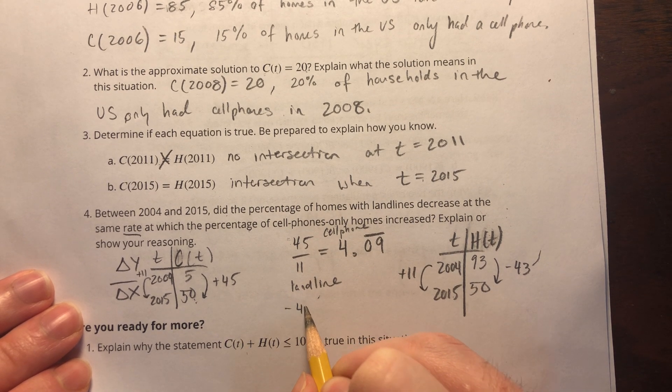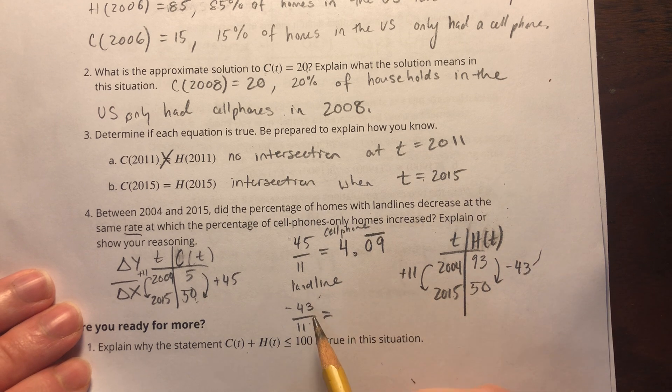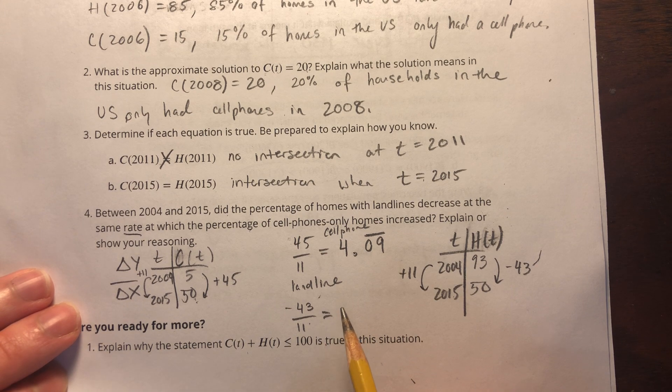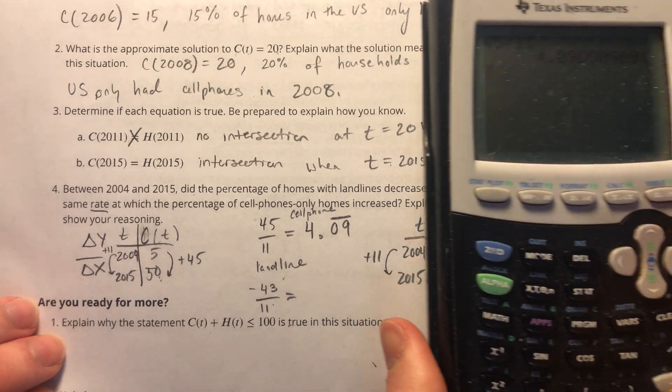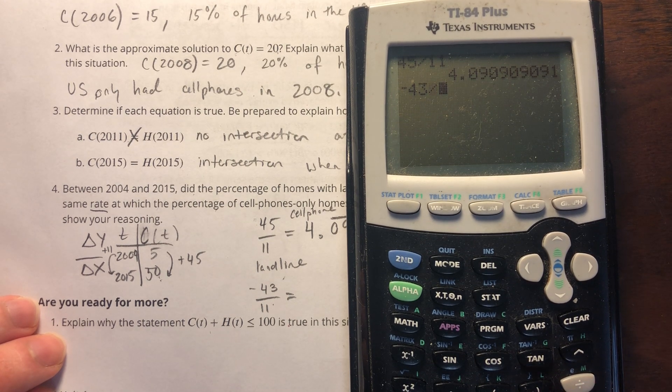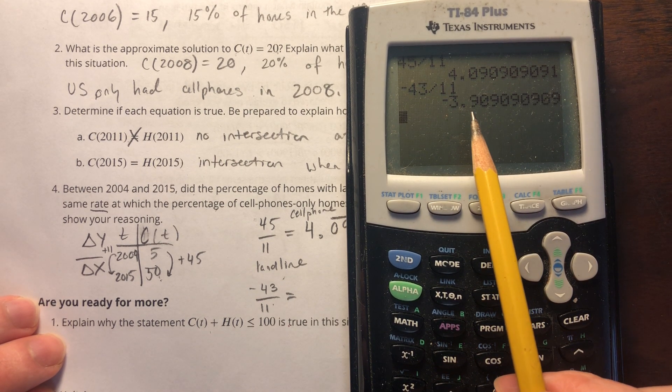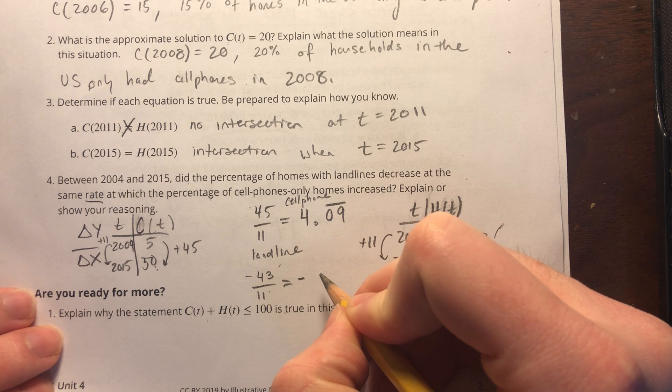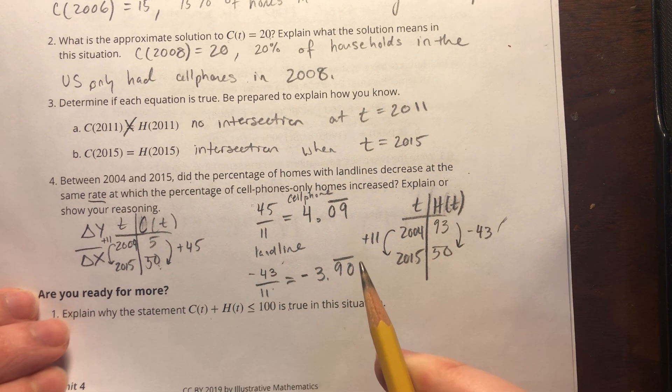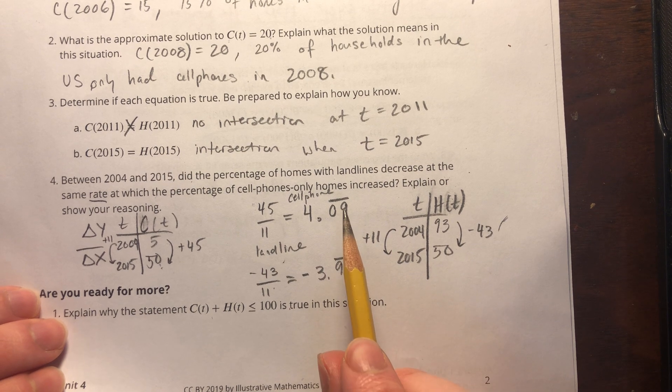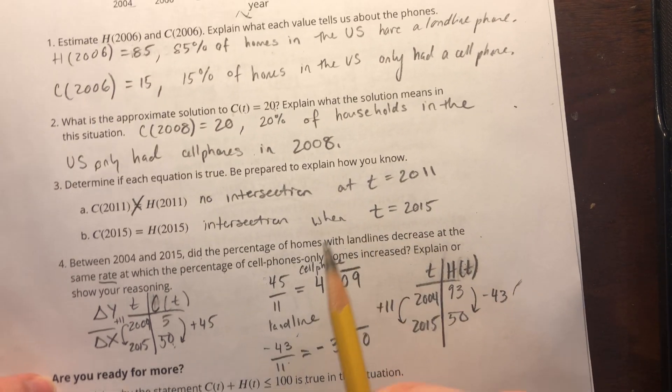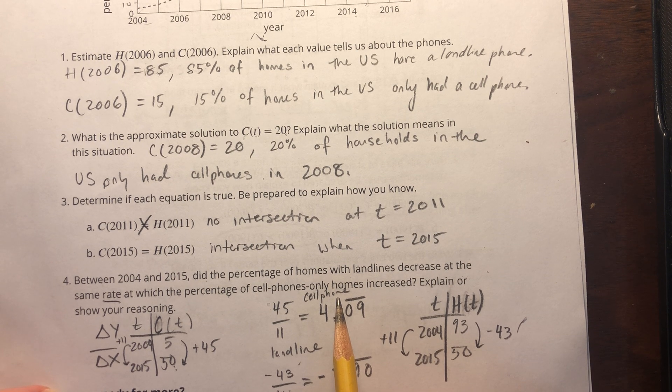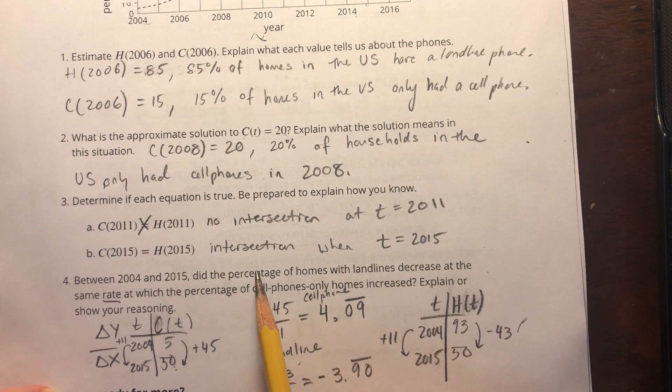I can already tell that this rate of change is going to be less. Even though we're talking about negative and positive, we can still say that the rate of change is less. They're only losing 3.90% every year, while they're gaining above 4%. This is below 4%, this is above 4%.